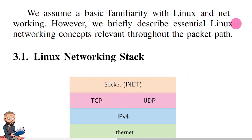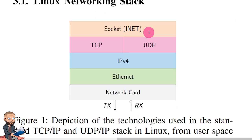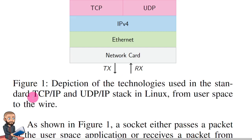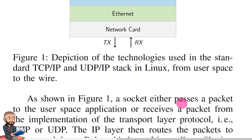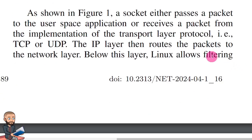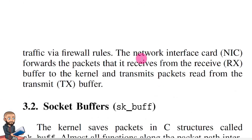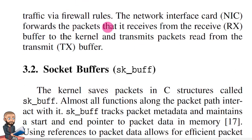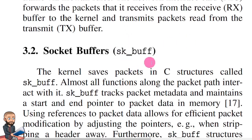We assume a basic familiarity with Linux and networking. However, we briefly describe essential networking concepts relevant. Here's a networking stack: you've got your socket, TCP or UDP, then IPv4, Ethernet, and network card — standard from user space to the wire. A socket either passes a packet to the user space application or receives a packet from the transport layer protocol, that is, TCP or UDP. The IPv4 layer then routes the packets to the network layer. Below this layer, Linux allows filtering — I have quite a few videos on IPv4 tables — filtering traffic via firewall rules. The network interface card forwards packets it receives from the receive buffer to the kernel and transmits packets read from the transmit buffer. And you can see that with the command ss -tnp, or at least you can see if there is data in either the send or receive buffers, or I think they're called send and receive queues.